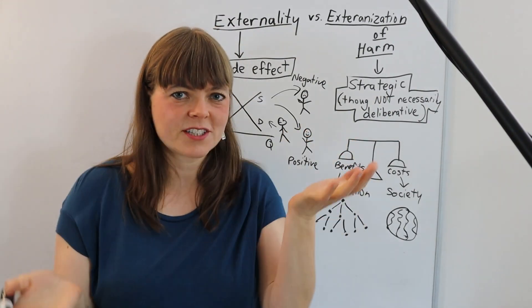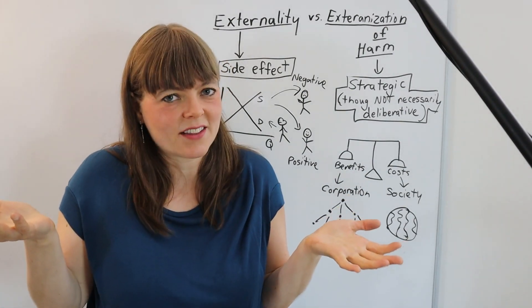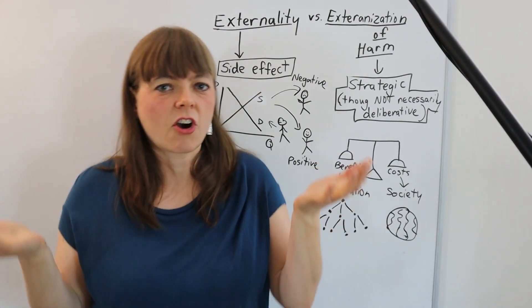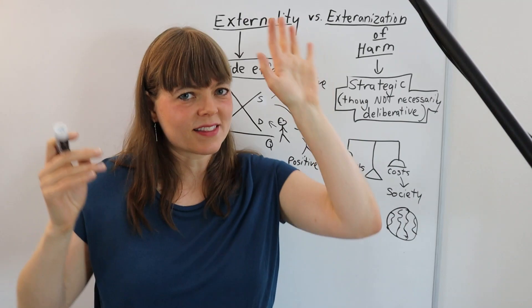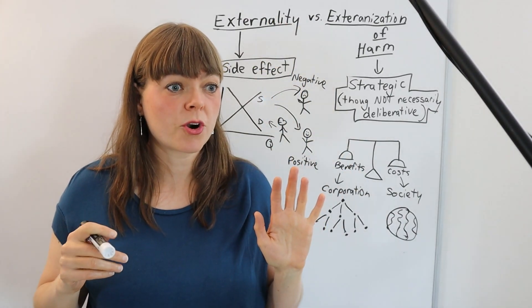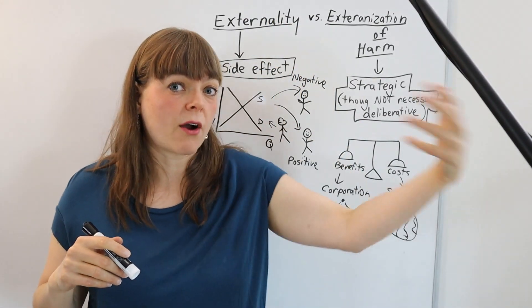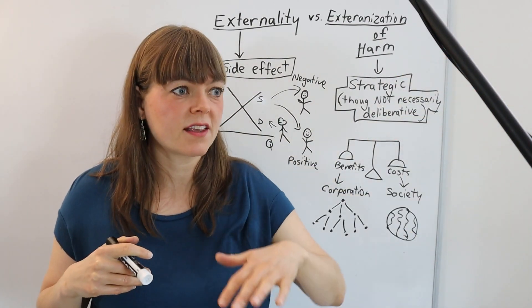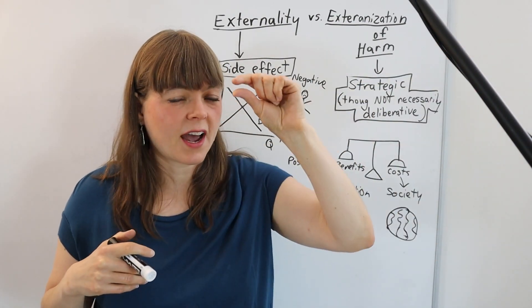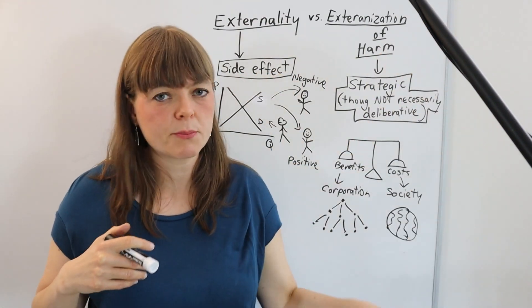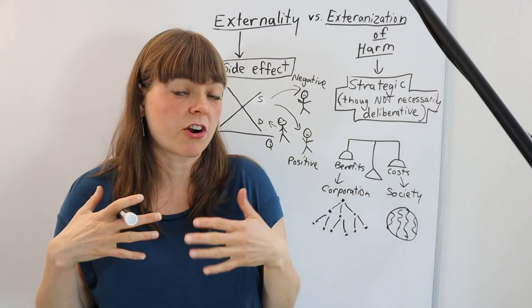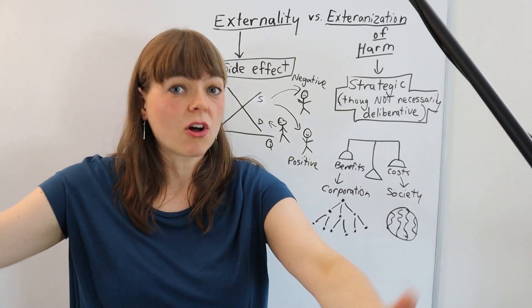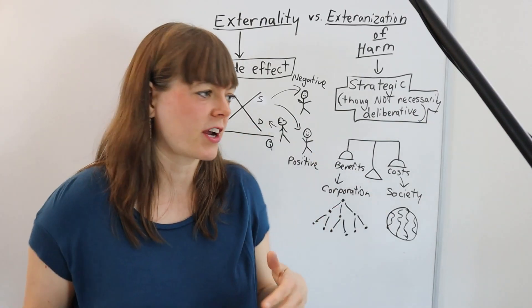So here we have a situation, corporations, executives inside the corporations are weighing costs and benefits. When they list the costs on the board, all of the costs are borne out by people outside the company, by society more broadly, maybe it's distributed as a very tiny negative effect on a lot of people. And the benefits are accrued inside the company, the C-suite people, all of the benefits go in their direction.